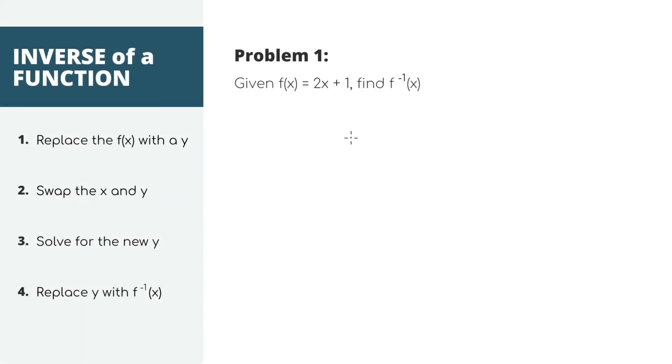Alright, let's start finding the inverse of functions now. We need to find the inverse of this function f of x equals 2x plus 1. Remember the notation, this little negative 1 just means the inverse of the function called f of x. The first thing you want to do to find the inverse is replace the f of x with a y. It just makes the next couple steps a little bit easier. And now we have y equals 2x plus 1.